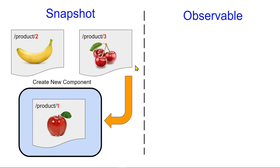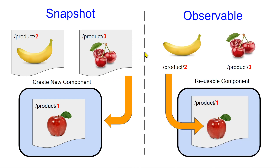The other one, observable, is a little bit different. Here in the view, you are using a single component but you're passing new data to that component. Therefore, you will never regenerate the component again — you're using one component but you feed data to it.